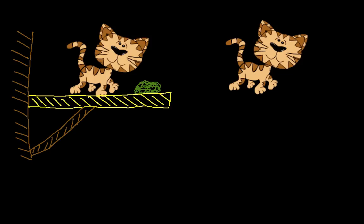We will define our system to be the cat. We will not consider our system to include the catnip, the beam the cat is walking on, the brace, or the wall. Our system will be just the cat. That's step number one — we've defined our system to be the cat.